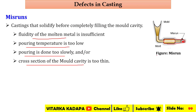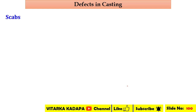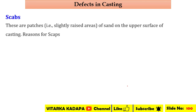The next defect is cold shuts. Cold shuts occur when there is a very small amount of gates and too many restrictions in the gate. You can observe that in the mold cavity there is some kind of obstruction where the molten metal does not enter into that particular part, leading to improper formation of the casting.